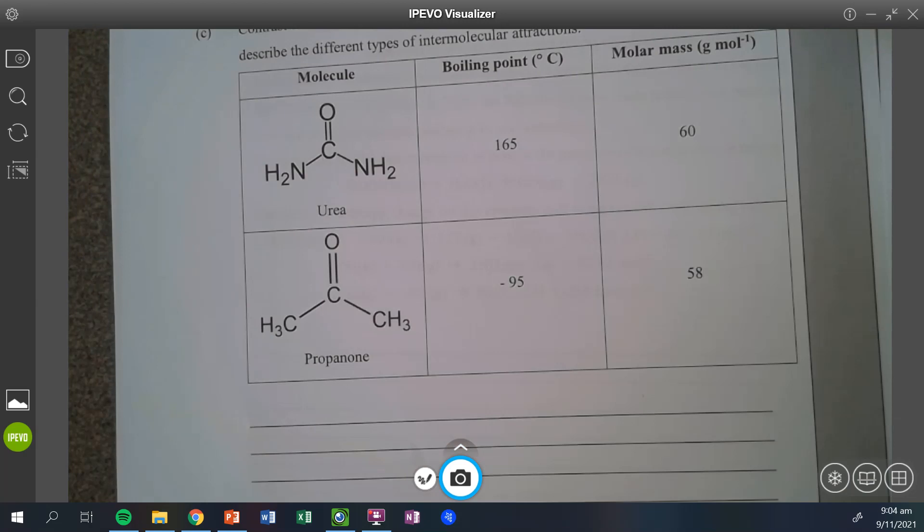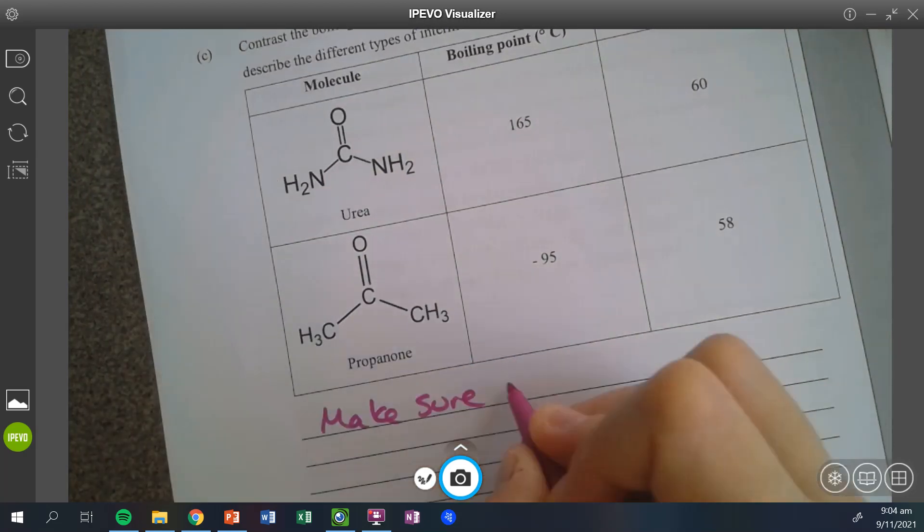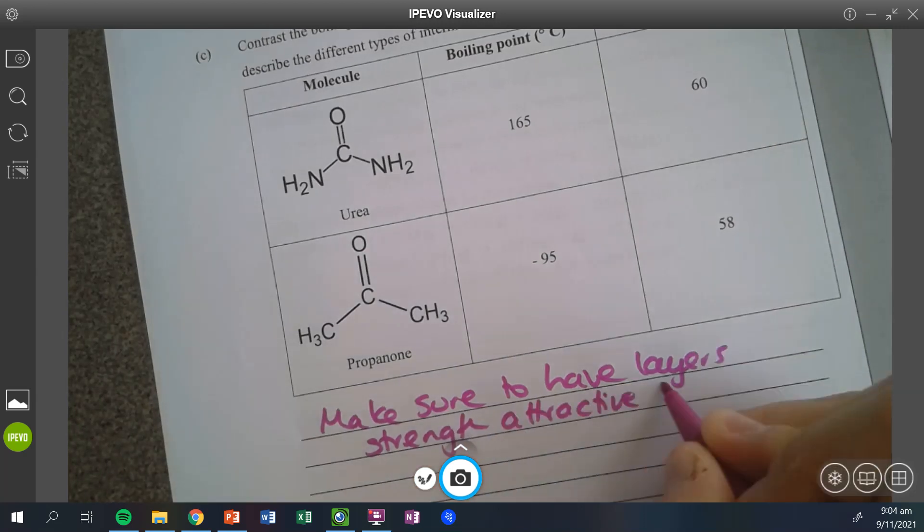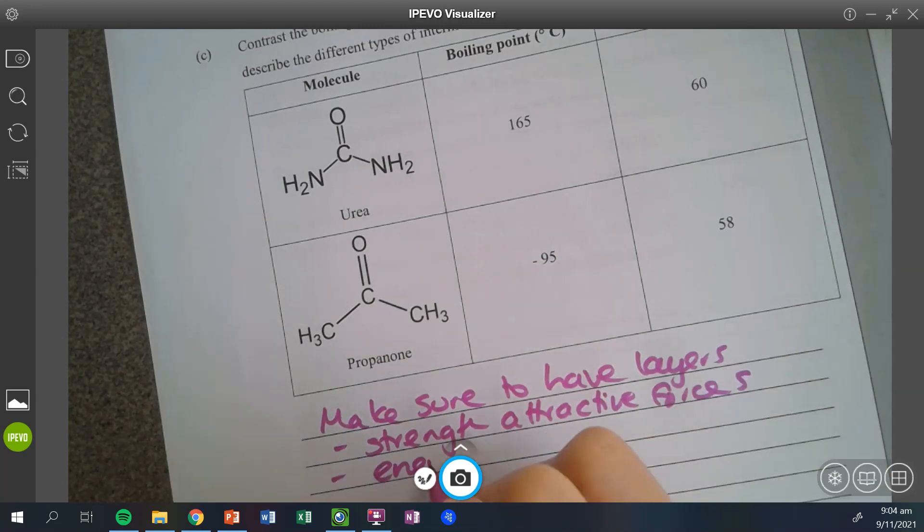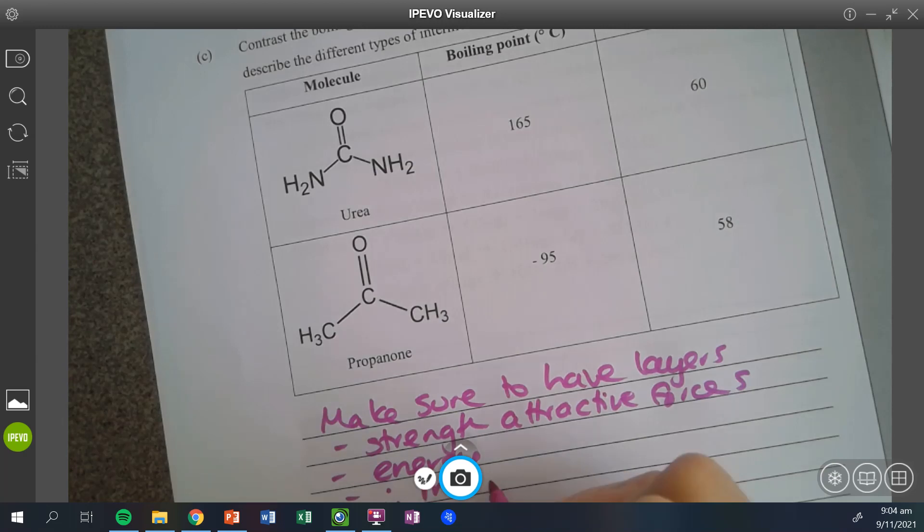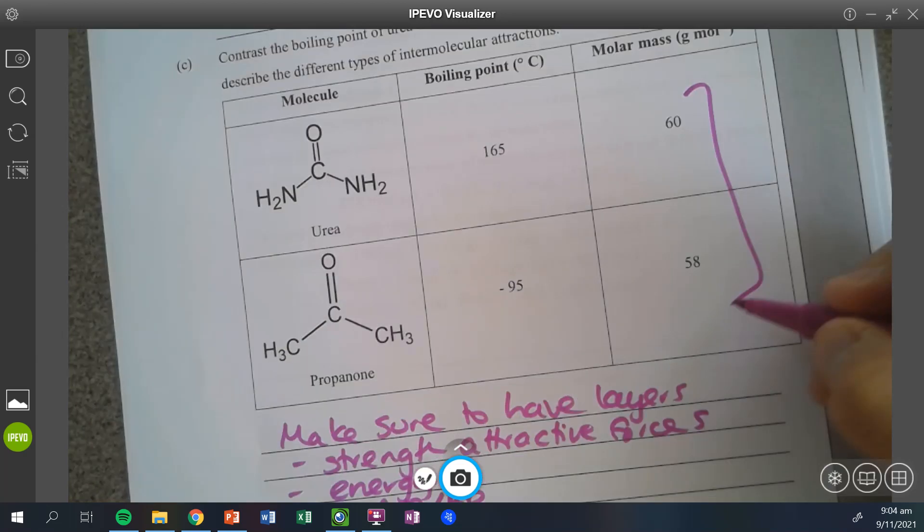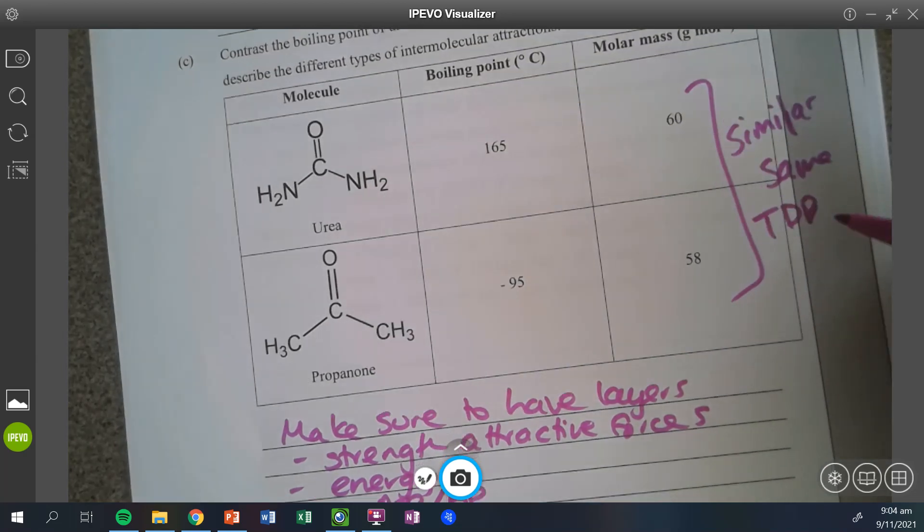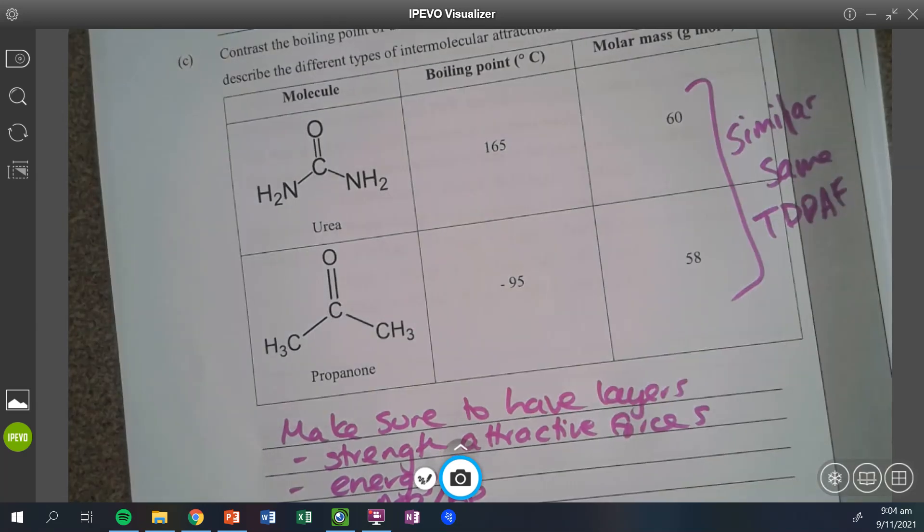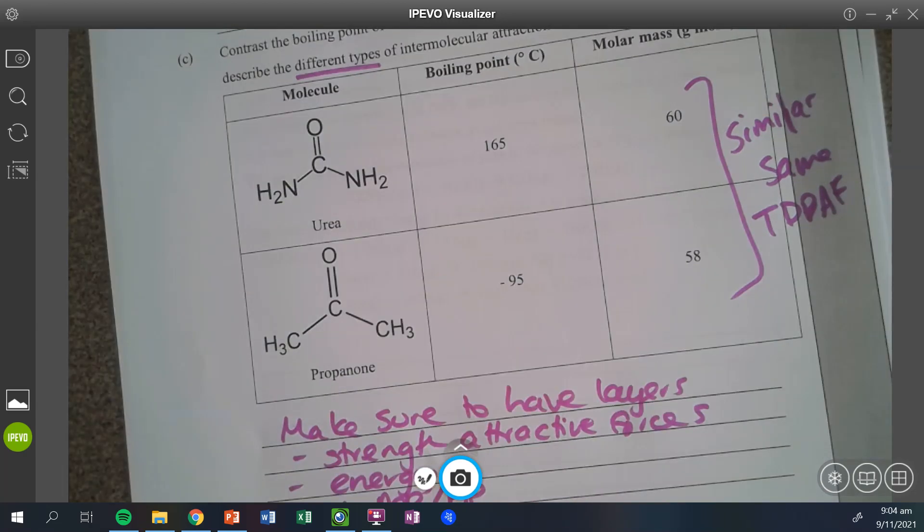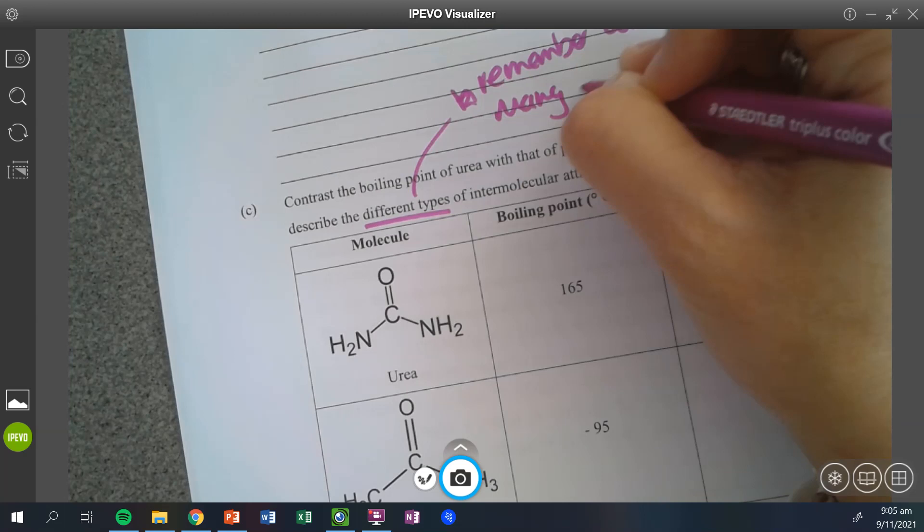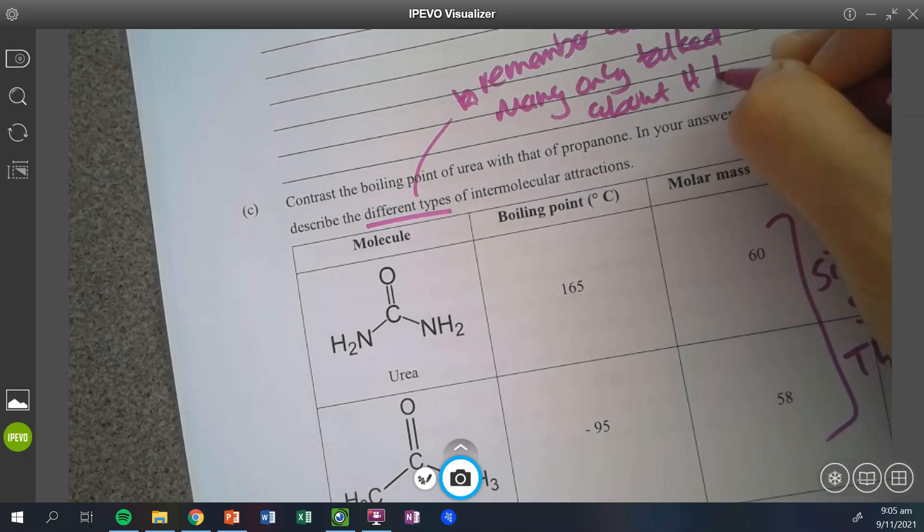So my recommendation for this one is make sure you have your layers. I might write that down. So strength of attractive forces, energy, and then therefore related back to the melting point or the boiling point. That's a general rule. Other things to keep in mind. This was similar. So same temporary dipole-dipole attractive forces. And then also the different types. So making sure you have them all listed. Don't just shortcut and forget somebody. So remember all of them. Many only talked about hydrogen.